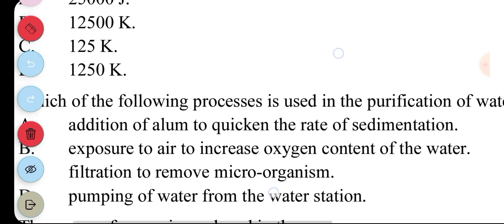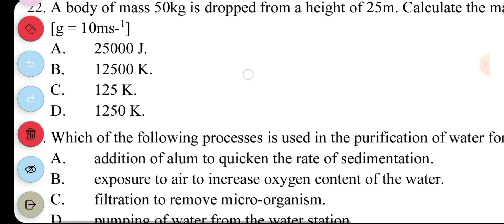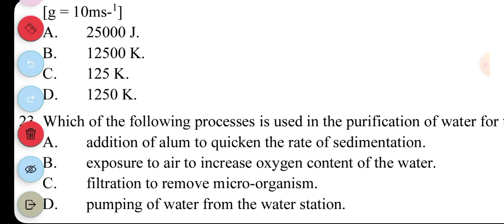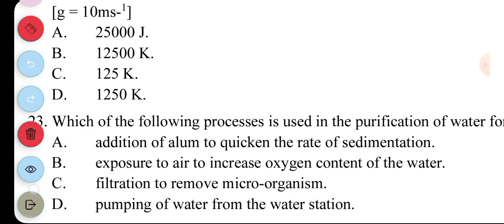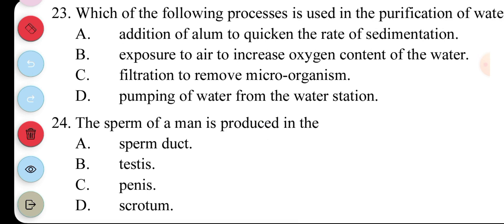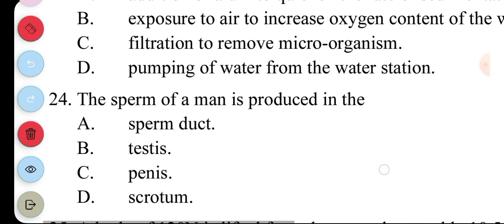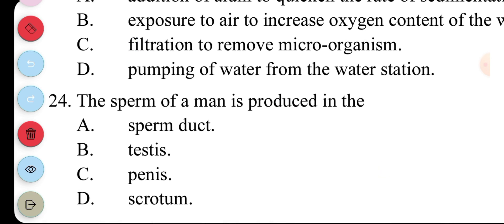Question 23. Which of the following processes is used in purification of water on supply? A. Addition of alum to quicken the rate of sedimentation. B. Exposure to air to increase oxygen content of the water. C. Filtration to remove microorganisms. D. Pumping of water from the water station. So, the answer to this question is A. Question 24. The sperm of a man is produced in the A. Sperm duct. B. Testes. C. Penis. D. Scrotum. The answer to question 24 is B. Testes.